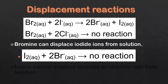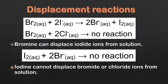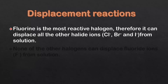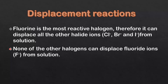In our final example, iodine cannot displace bromide ions from solution because bromine is more reactive than iodine, and iodine is the least reactive of the halogens, so we have no reaction. Iodine cannot displace bromide or chloride ions from solution. Finally, fluorine is the most reactive halogen, therefore it can displace all the other halide ions — the chloride ion, the bromide ion, and the iodide ion — from solution. None of the other halogens can displace fluoride ions from solution.